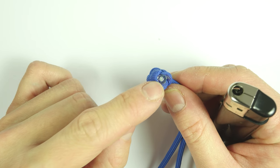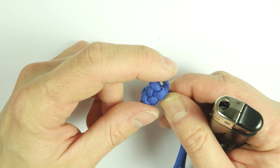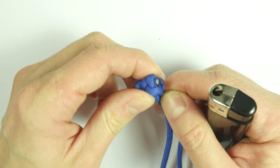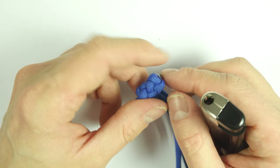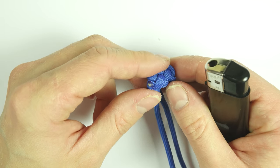By flattening out your end like this, you prevent it from slipping back into the loop since it jams here. You can do this on both sides of the knot.